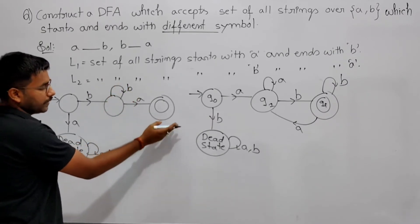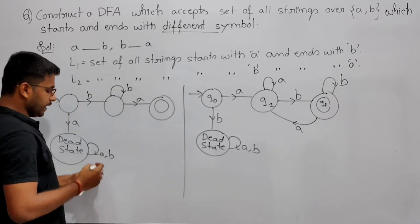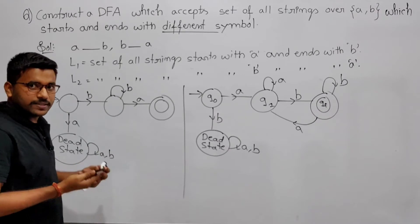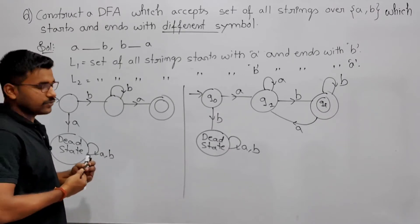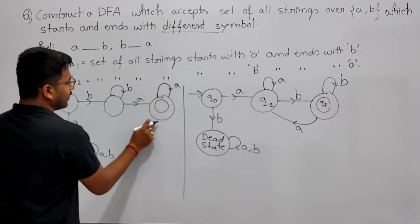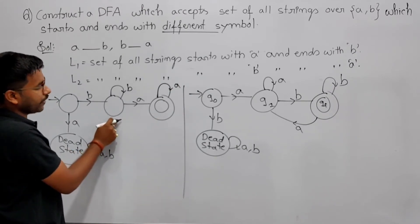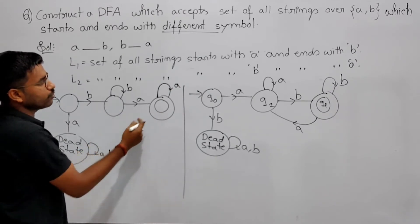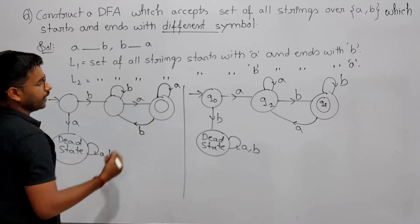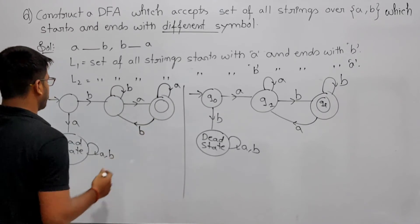Once you get a, you reach the final state. After reaching the final state, if you are getting any number of additional a's, it still ends with a so you stay there. Now after reaching the final state if you are getting b, then you come back to the waiting state — because it is no more ending with a. From there you wait for a, and once you get a you reach the final state again.